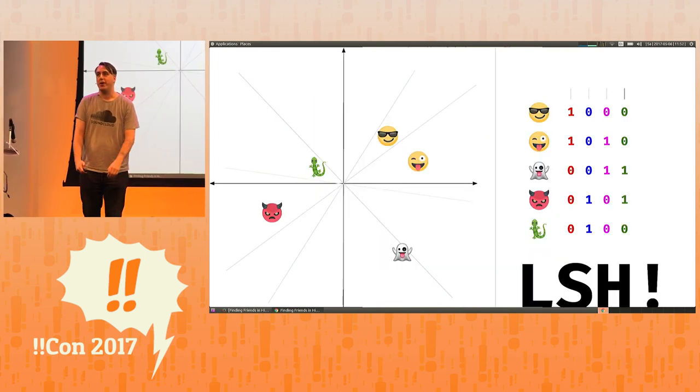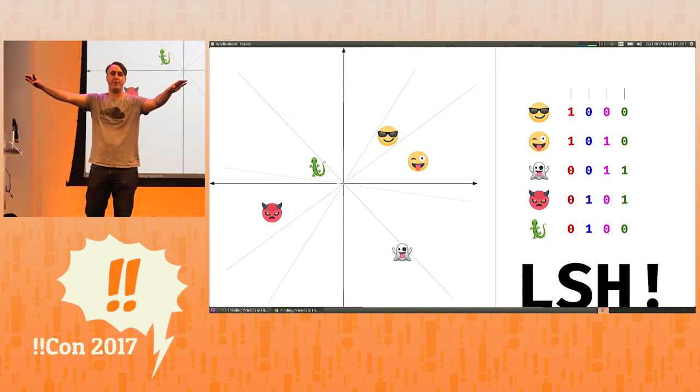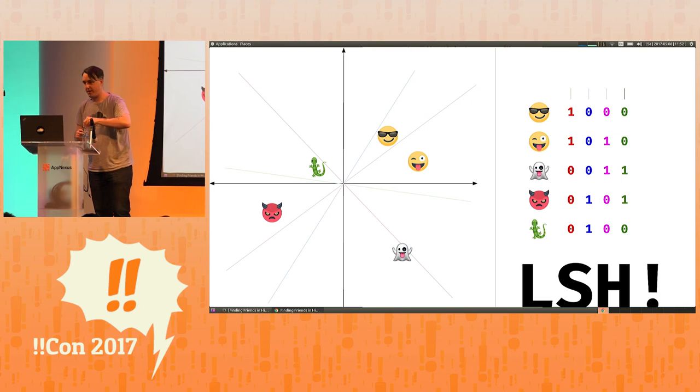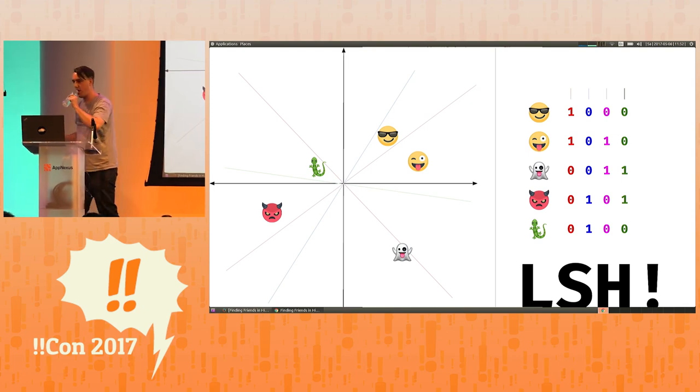I have no idea how that works, but that's it. That is locality-sensitive hashing. May all your vectors be hashed. Thank you.